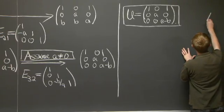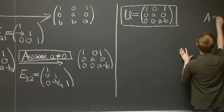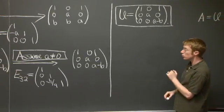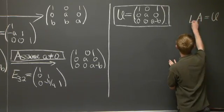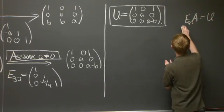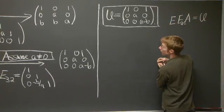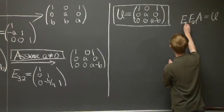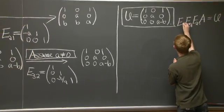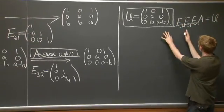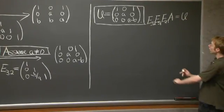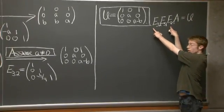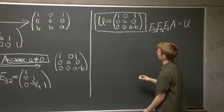So remember that we started with A, and we got U. And how did we do that? Well, we multiplied on the left by all of these elimination matrices, E₂₁, E₃₁, and E₃₂. Now, if we move these elimination matrices to the other side, then we'll get L.